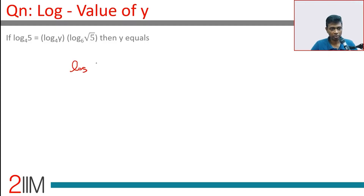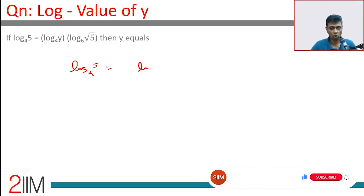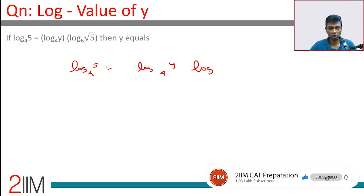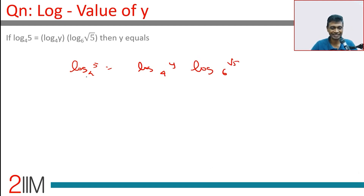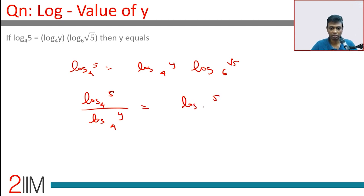log 5 to the base 4 equals log y to the base 4 times log root 5 to the base 6. Taking this to the other side, we get log 5 to the base 4 divided by log y to the base 4, which is nothing but log 5 to the base y. This equals log root 5 to the base 6.